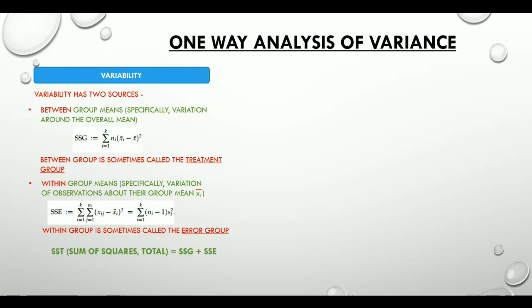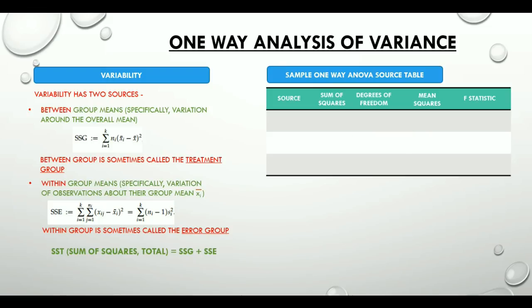Let's look at a sample one-way ANOVA source table. We have five different headers here: source, sum of squares, degrees of freedom, mean squares, and the F statistic.